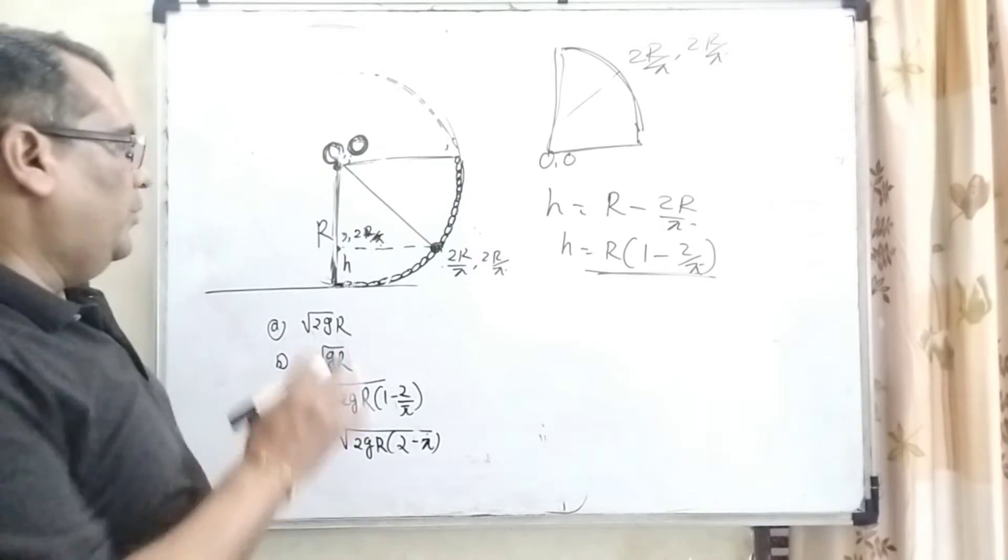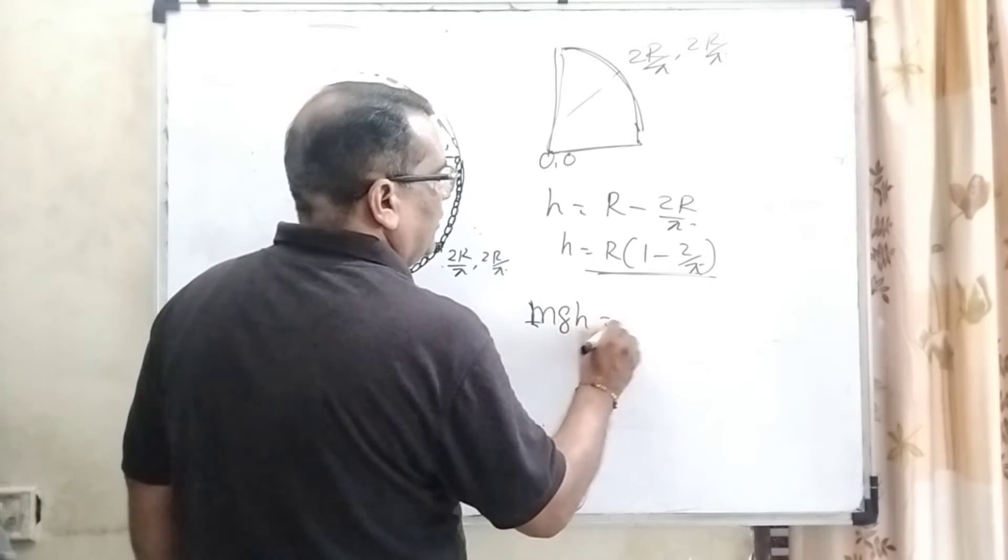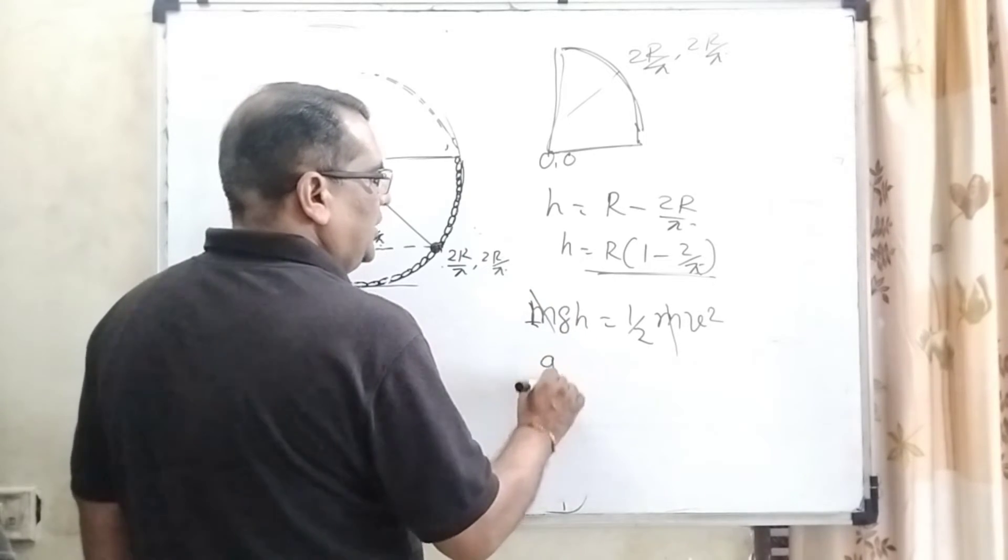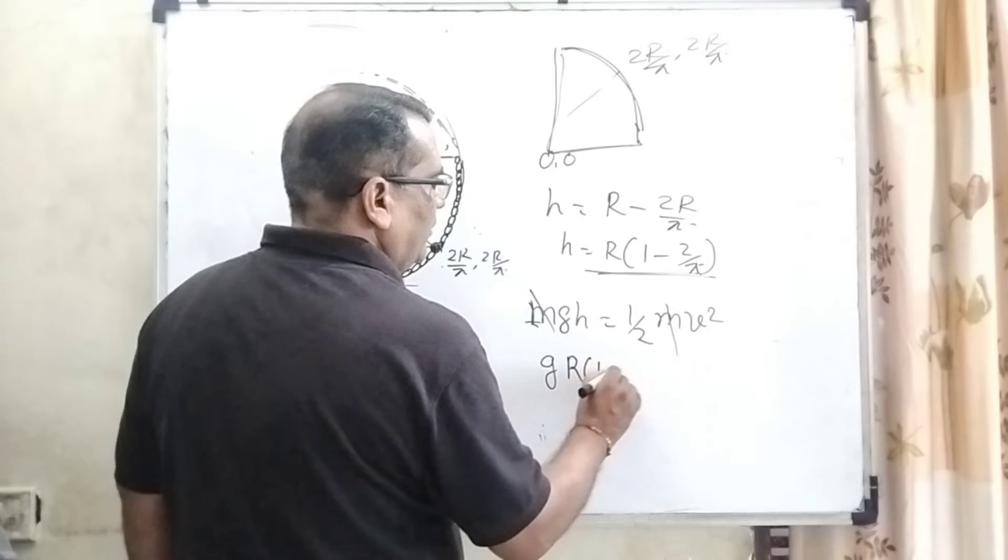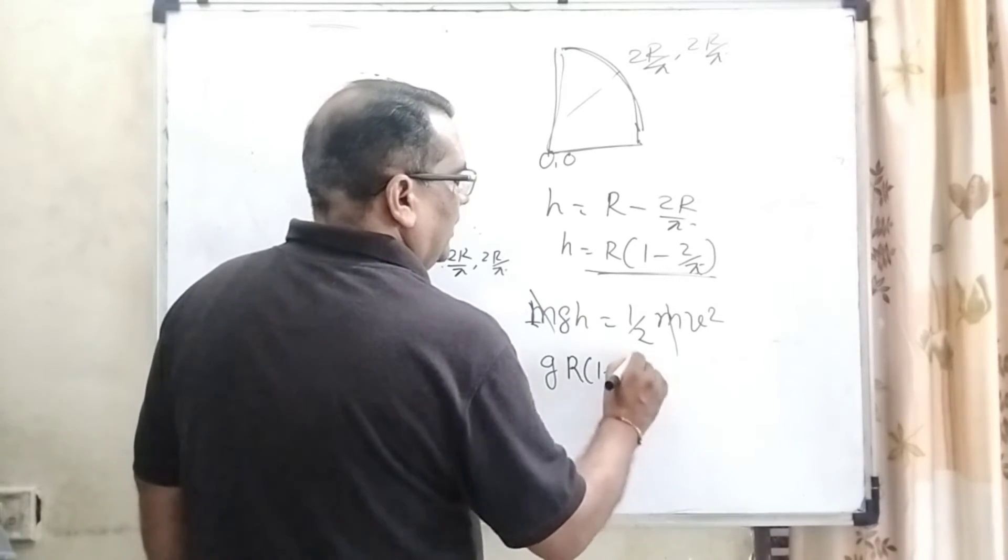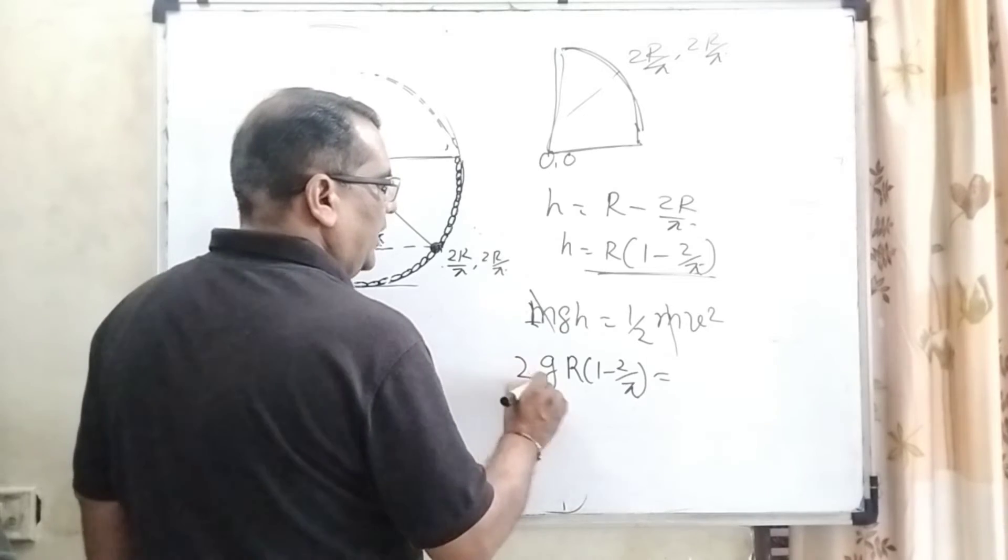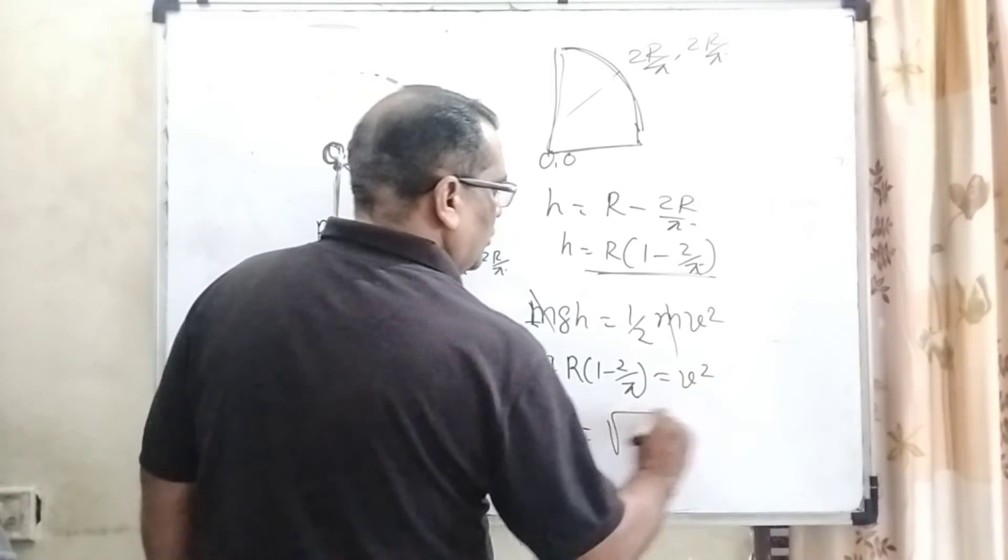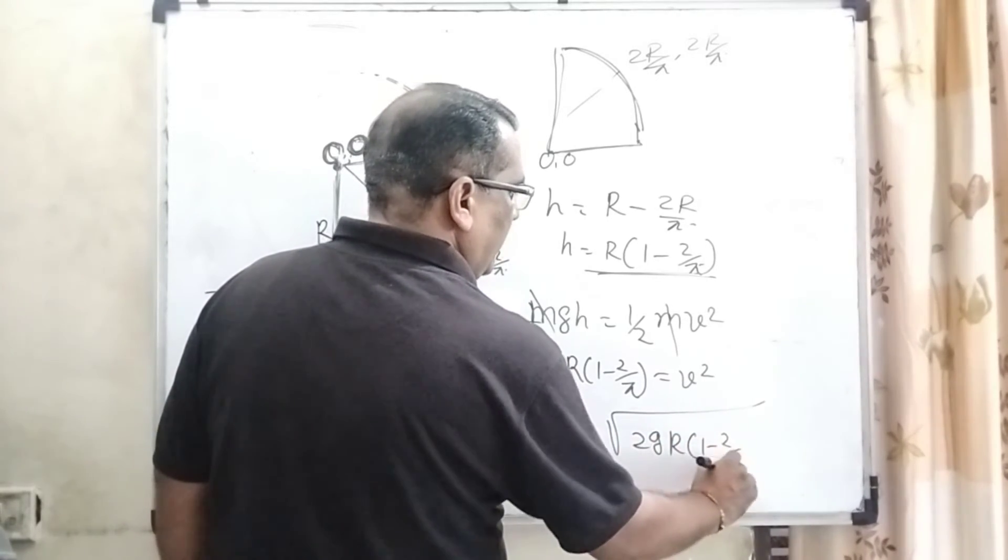Now, potential energy mgh equals kinetic energy (1/2)mv squared. m cancels out. Substituting the value of h as R(1 minus 2 by pi), and transposing the 2 to the left side in the numerator, we get v squared. Then v can be written as root 2gR into bracket (1 minus 2 by pi).